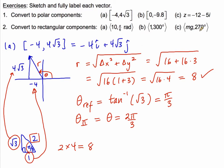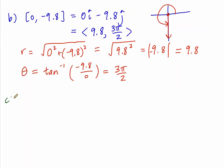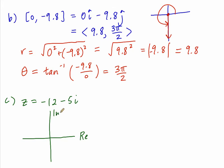Next we have a complex number negative 12 minus 5i — this is not i-hat but rather the complex number z. Sketching in the complex plane, the horizontal axis is the real axis and the vertical is the imaginary axis, so we go 12 to the left and 5 down. Treating it as a vector, the real part negative 12 is like the delta x component and the imaginary part negative 5 is the delta y. Making a triangle, we should recognize the 5-12-13 special Pythagorean triple, so the magnitude is 13.